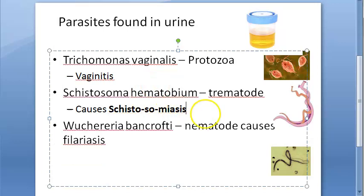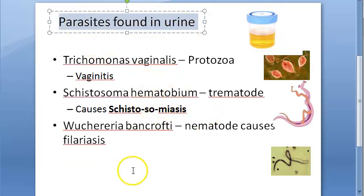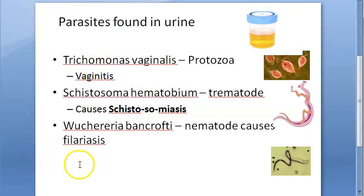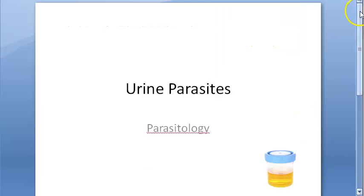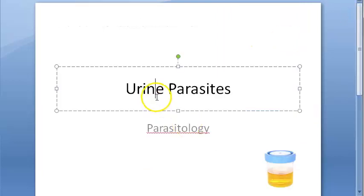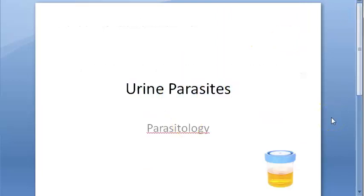So these are the three parasites you will write if they ask about parasites found in urine. To summarize: you can find Trichomonas vaginalis, Schistosoma haematobium, and Wuchereria bancrofti. These are the urine parasites.